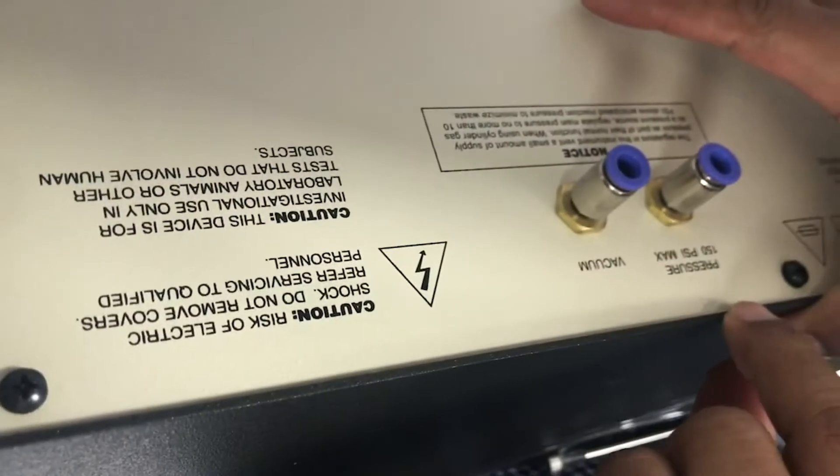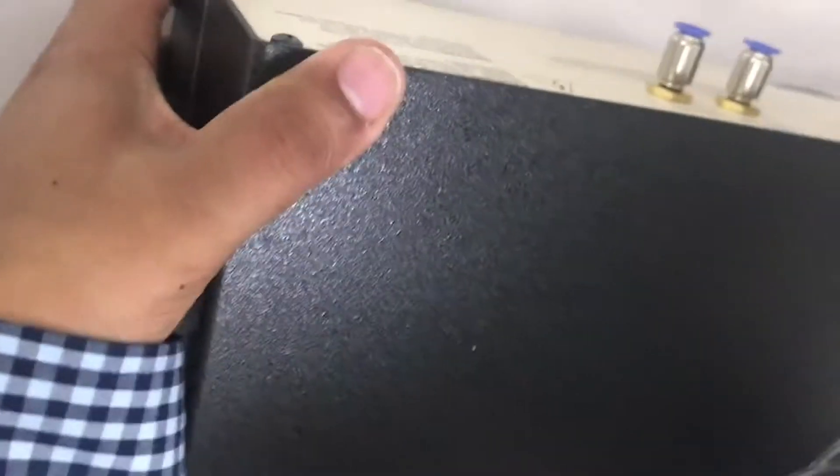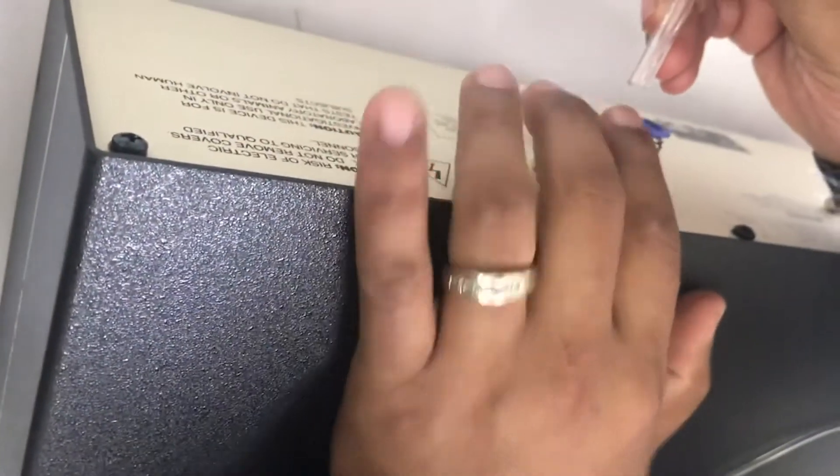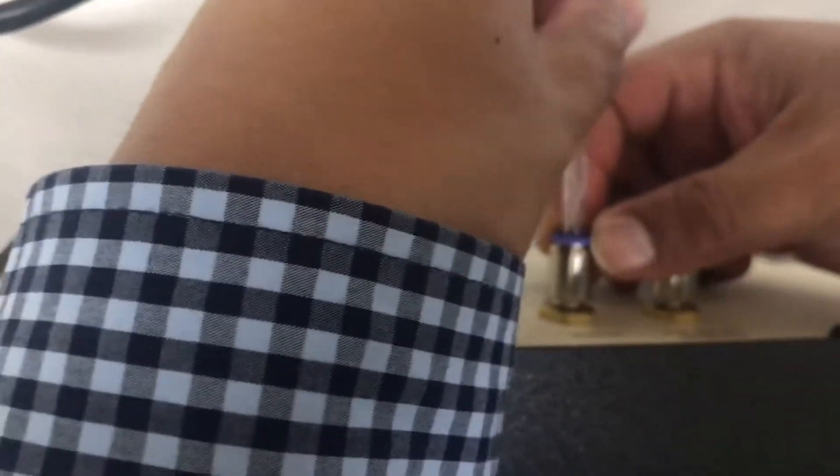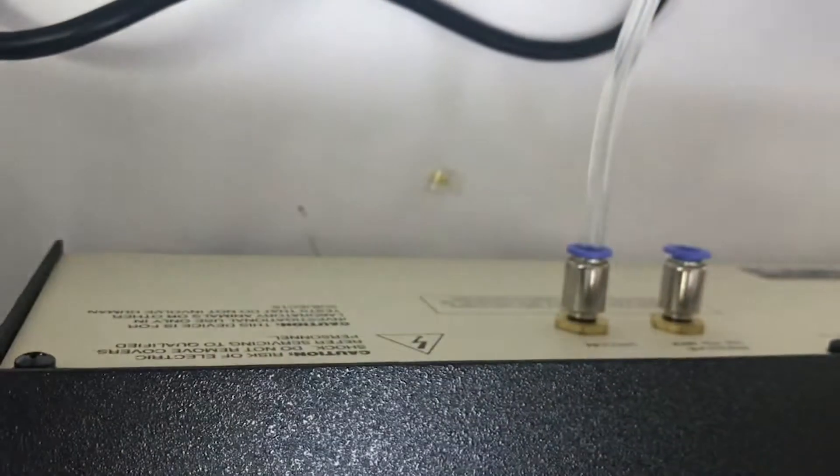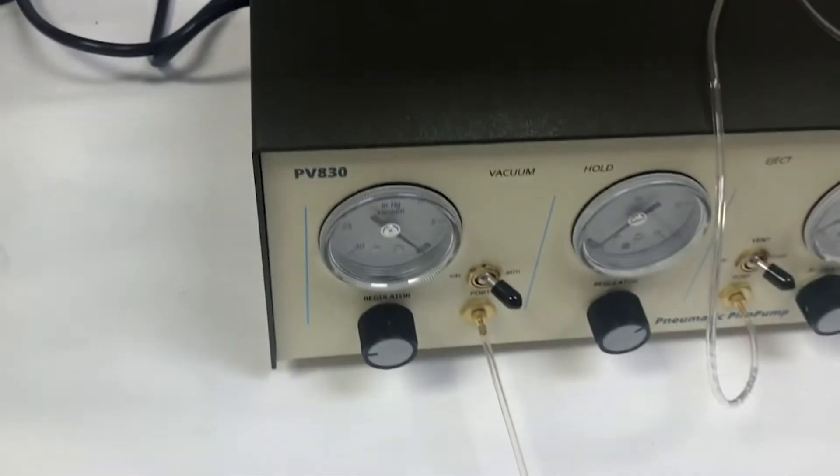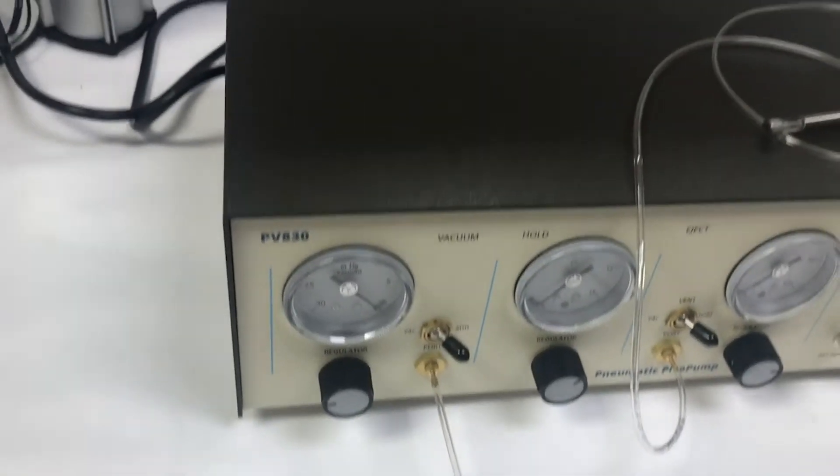You can see we have one for vacuum and one for pressure, so this tubing will go into the pressure. Now you have to press the button in and then just push the tubing firmly and let go. So now your vacuum source is set up. Turn on the machine.